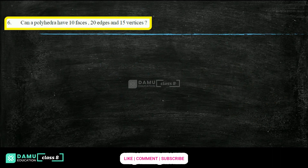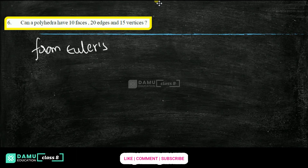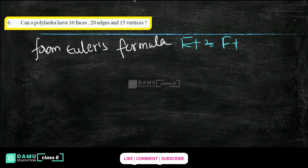The next question: can a polyhedron have 10 faces, 20 edges, and 15 vertices? Using Euler's formula to check: E + 2 = F + V. Substituting: 20 + 2 = 10 + 15, which gives 22 on the left side and 25 on the right side.